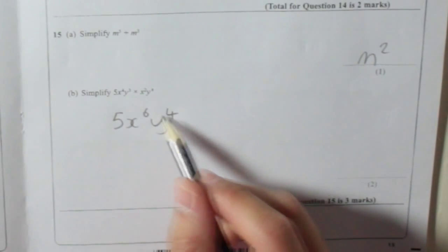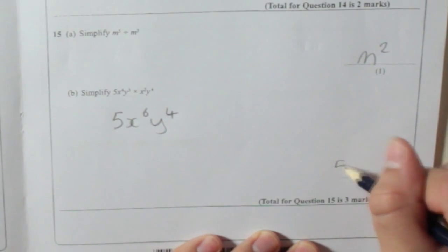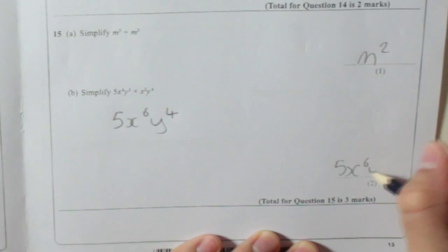A lot of people would put 3 and get it wrong. 5x to the power of 6, y to the power of 4.